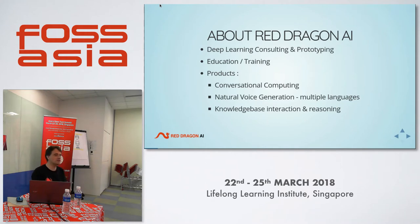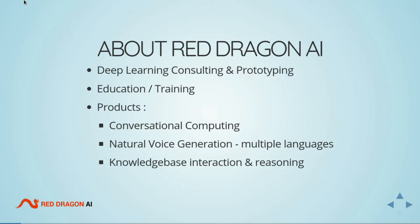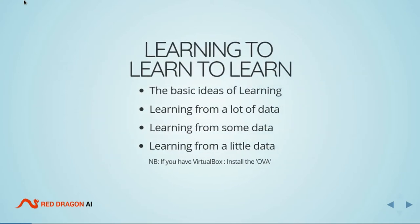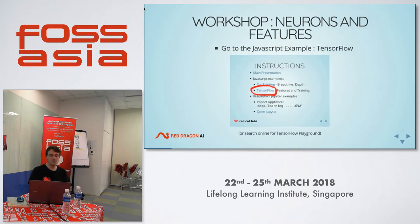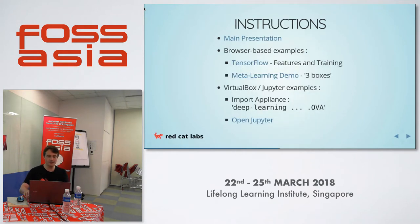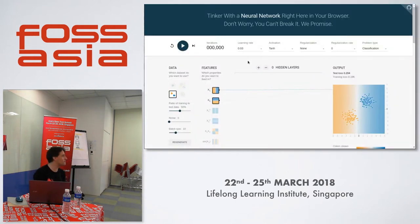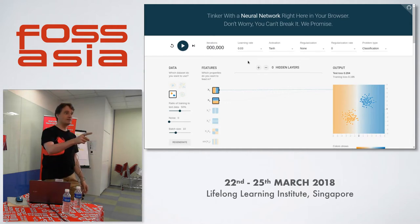In terms of products, we're interested in conversational computing. If you've got a Google Assistant you know how limited it is — we think there needs to be a next generation. That will need natural voice generation and knowledge base interaction. The idea here is you're going to be learning to learn to learn. I'll talk about learning from a lot of data, from some data, and from just a little data. If you've got VirtualBox you'll be installing the OVA. First though, if you click the TensorFlow link you'll get this simple thing — how many people here have seen the Google Playground?